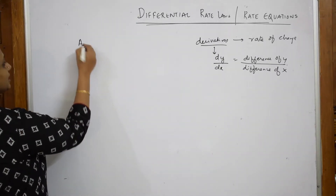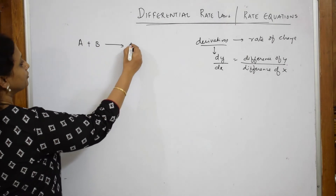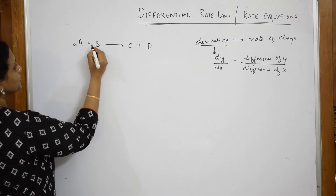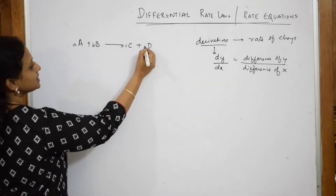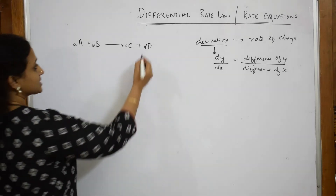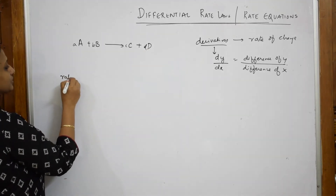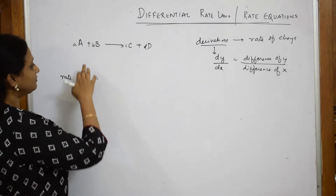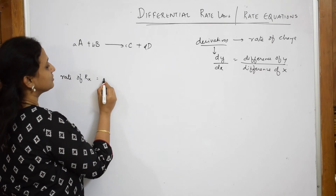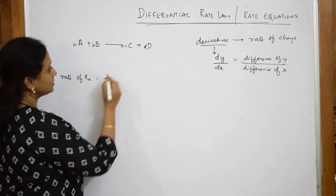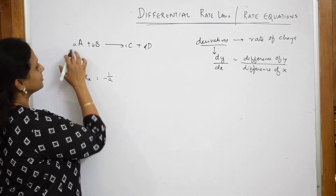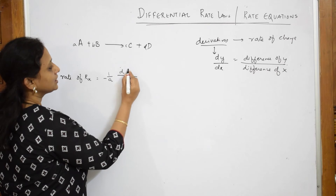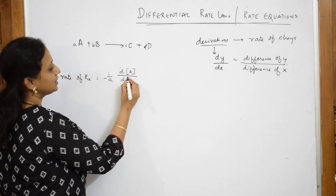Suppose I have a reaction A, it is going to combine with B, it is going to form a product C and D. The coefficient of this is small a after balancing, small b, small c and small d. Now, I have to write the rate of a reaction. I very well know the rate of reaction is equal to a decrease in concentration, that is 1 by a, divided by d[A] by dt.